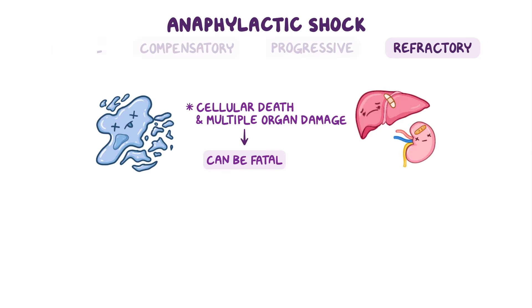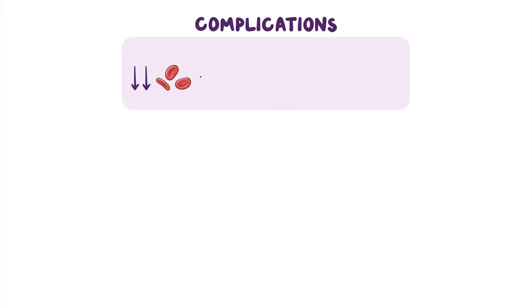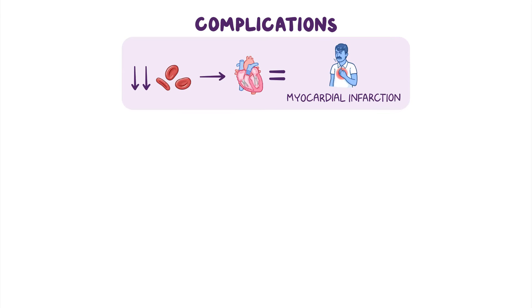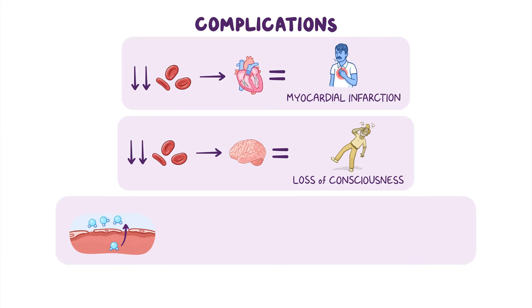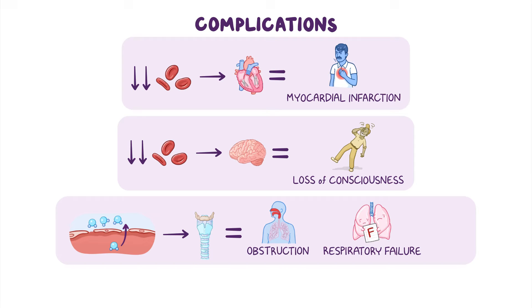Moving on to complications: reduced blood supply to the myocardium can result in myocardial infarction, while reduced blood supply to the brain might cause loss of consciousness. Additionally, edema can affect the airway — more specifically, the larynx — and cause upper airway obstruction, respiratory failure, as well as complications such as cardiorespiratory arrest, and even death.